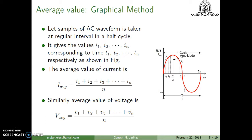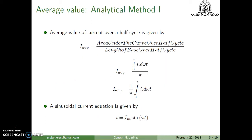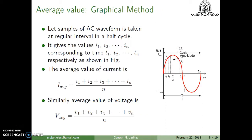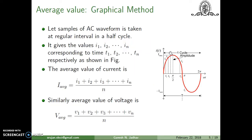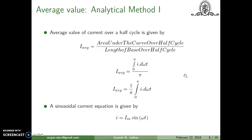Using the graphical method we can determine the average values. Now let us see how we can define the average value using the analytical method. I_average is always equal to the area under the curve over the half cycle divided by the length of the base over the half cycle. The length of the base is from 0 to pi, that is the length is pi.